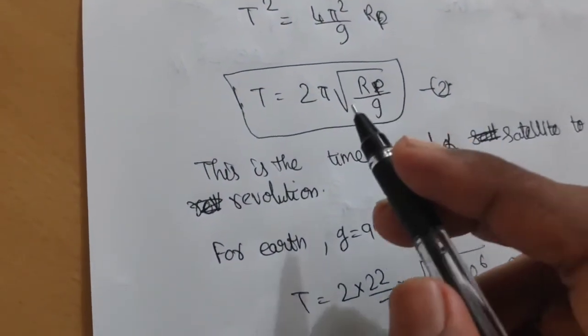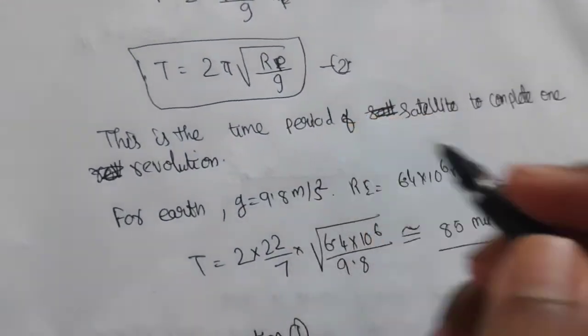T = 2π√(Rp/g). This is the time period of the satellite to complete one revolution.